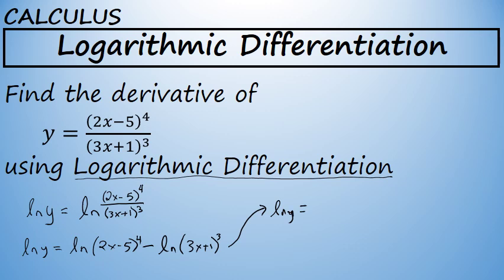Additionally, each of the terms on the right side of this equation have an exponent that can be moved to the front of the natural log. So the first term becomes 4 times the natural log of 2x minus 5, and the second term becomes 3 times the natural log of 3x plus 1. We've taken the natural log of both sides, so the left side is now the natural log of y. The right side has been expanded to make each individual term's derivative much simpler to find.